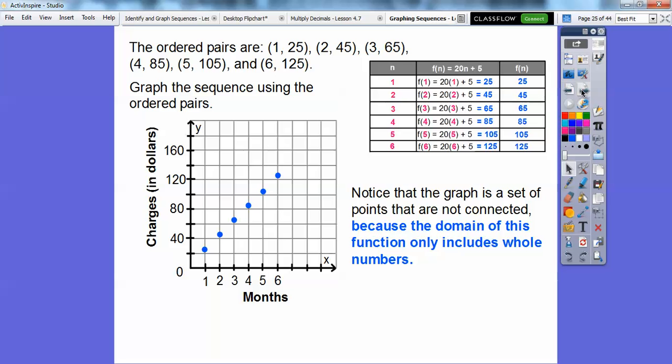So when we graph these points, we're going to get those 6 points, and they should look like they're going in a straight line. But again, we don't connect them. The graph is a set of points that are not connected, because the domain of this function only includes whole numbers. And it only gives us whole numbers for the output, the range.